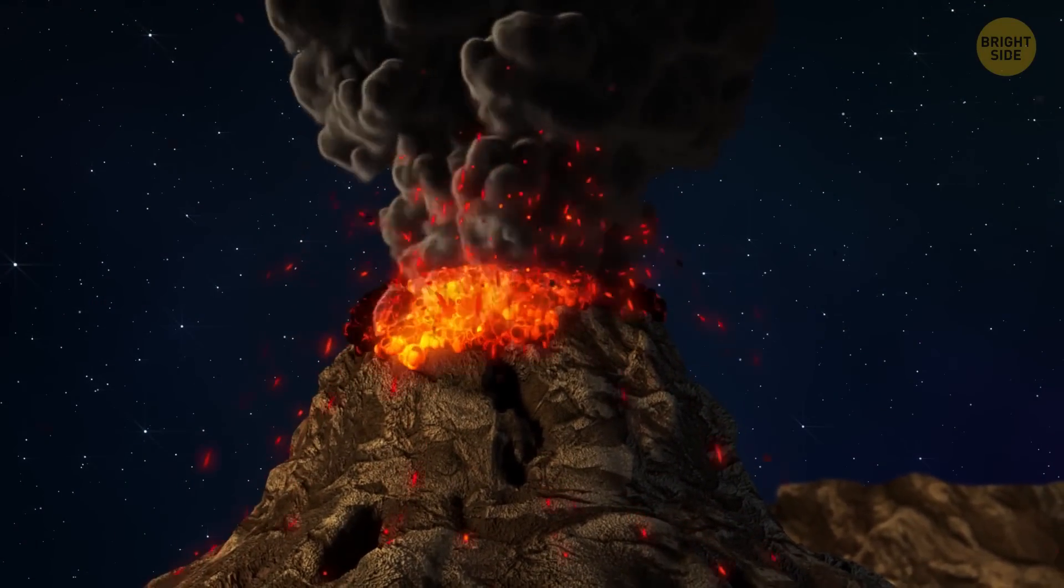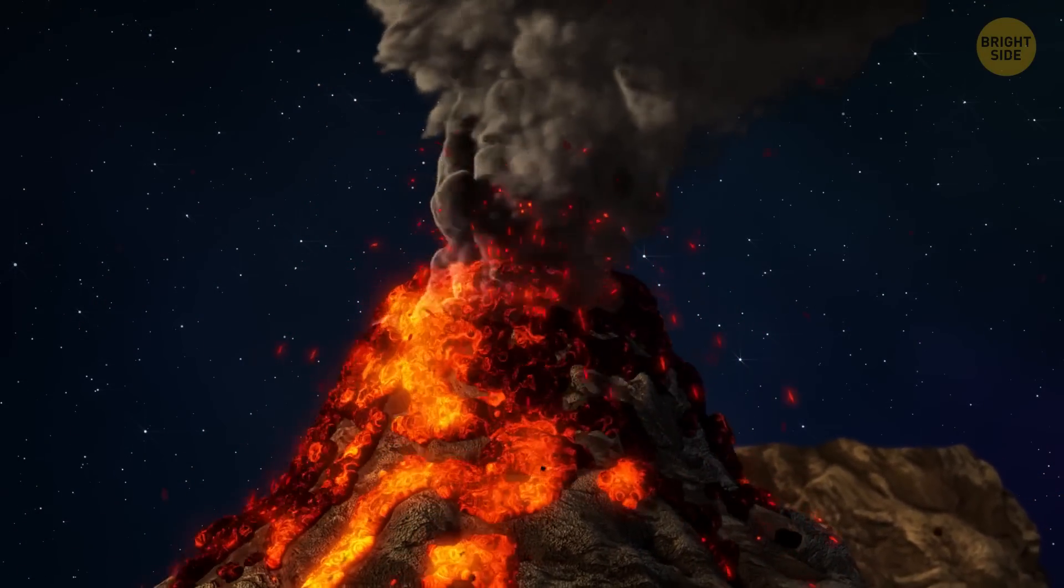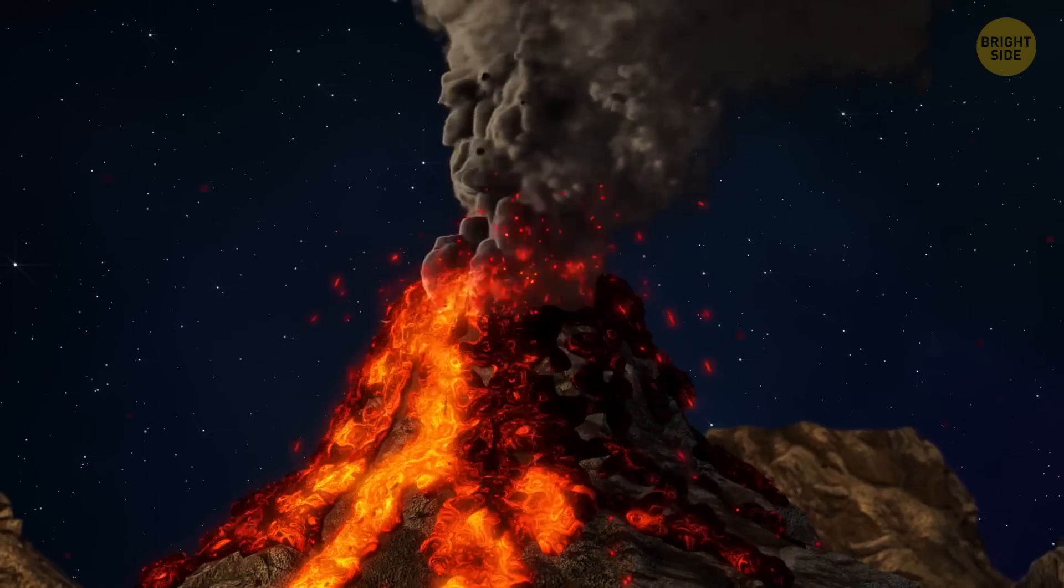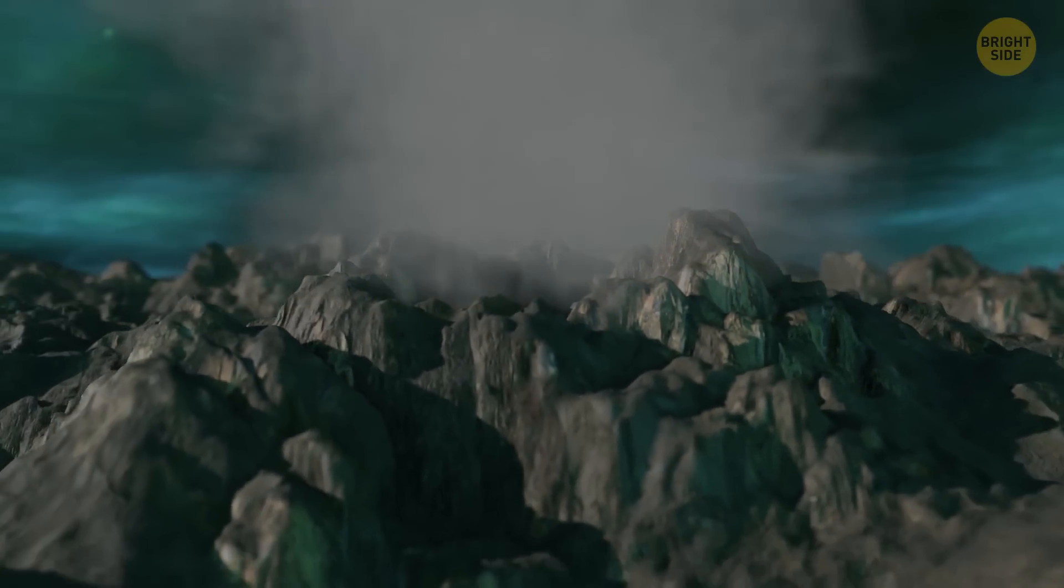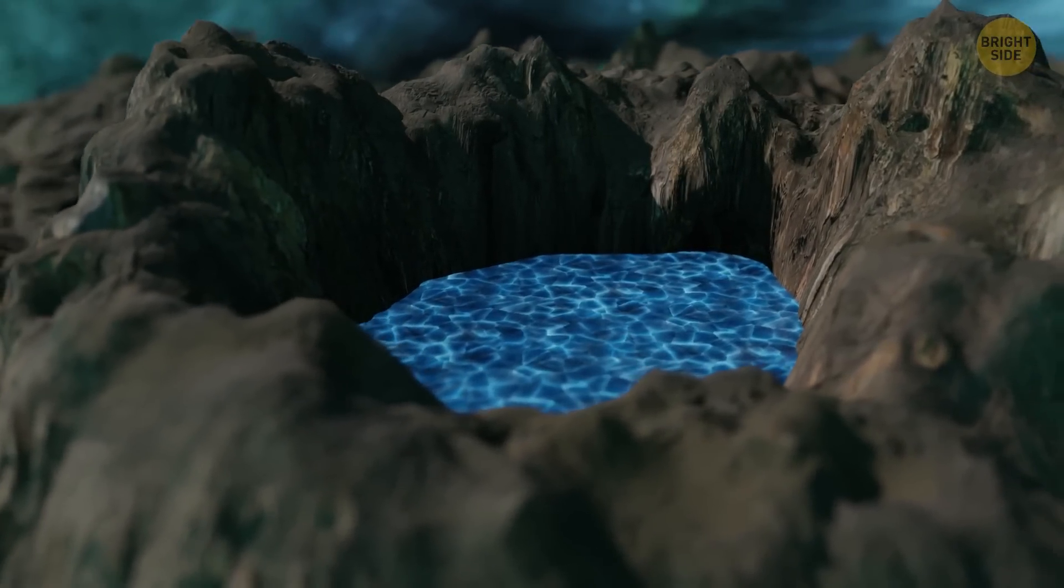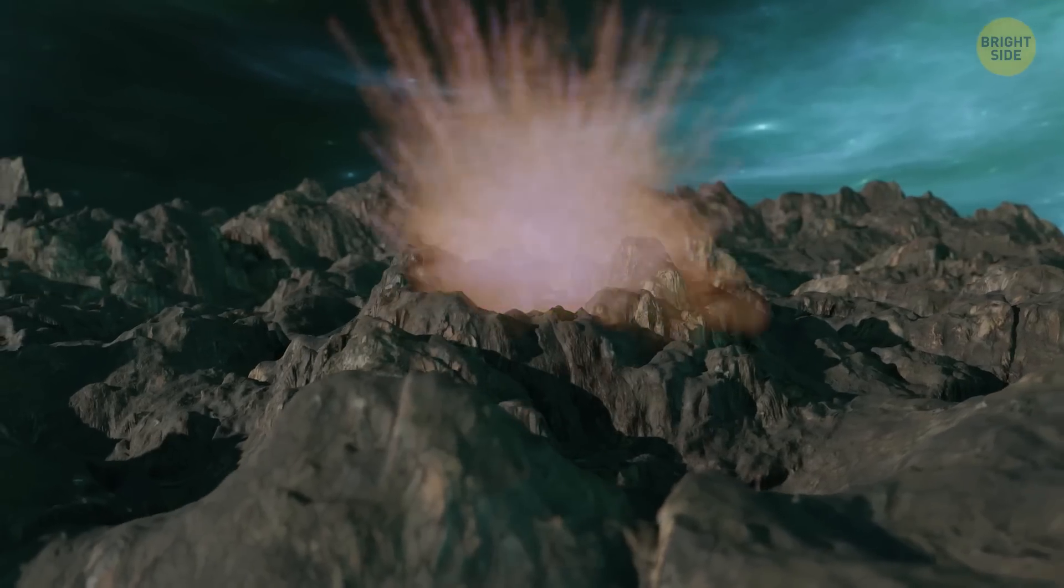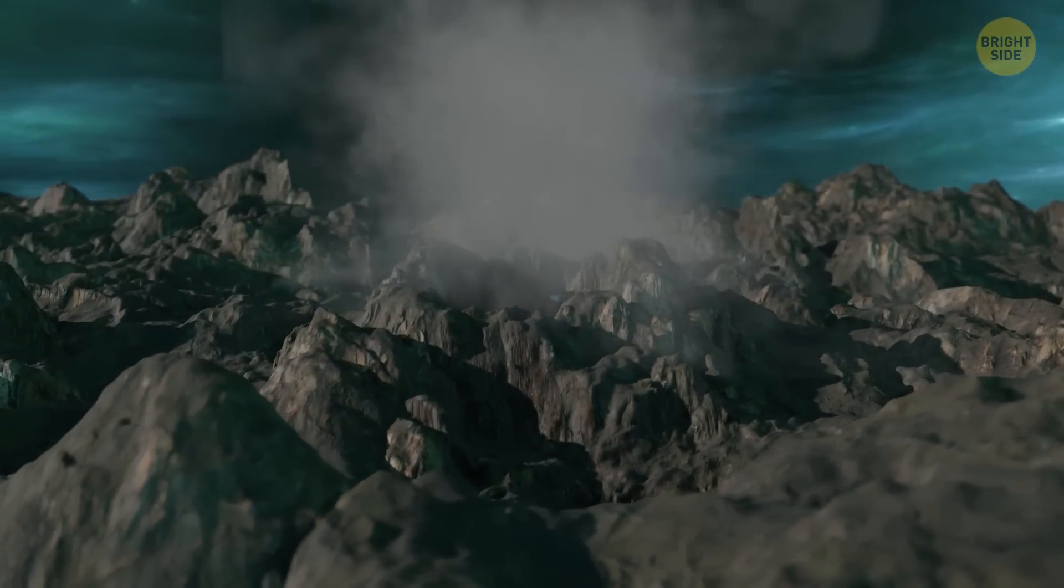Volcanoes on Earth are as different from those on Pluto as fire and ice, and I mean it. While we have volcanoes spilling lava on our planet, the volcanoes on Pluto spit ice. When frozen water expands, enormous pressure builds up until one day, bang, the ice erupts. In the process, a new cryovolcano gets formed.